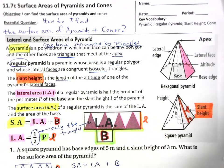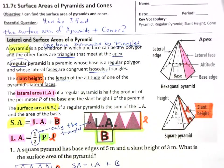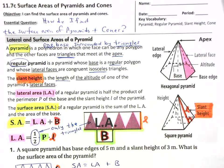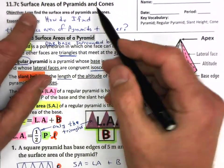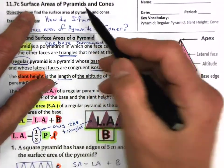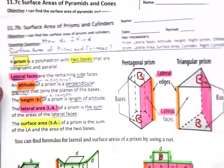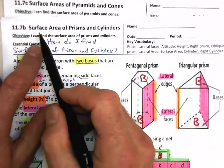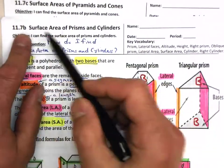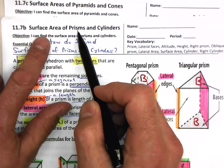Welcome to 11.7C, and we are looking at the surface area of pyramids and cones. We just finished up a little while ago at 11.7B, surface area of prisms and cylinders.